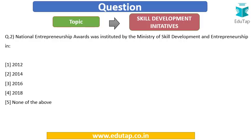Question 2: National Entrepreneurship Awards were instituted by the Ministry of Skill Development and Entrepreneurship in which year? Options are: (A) 2012, (B) 2014, (C) 2016, (D) 2018, or (E) none of the above.